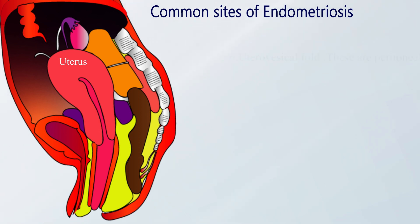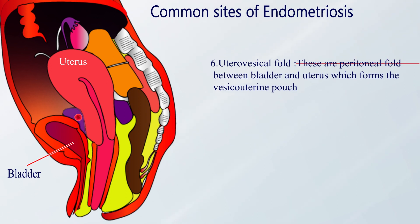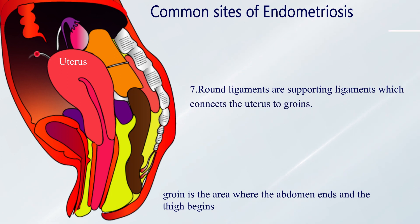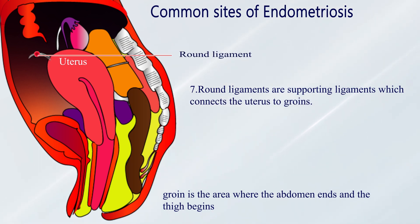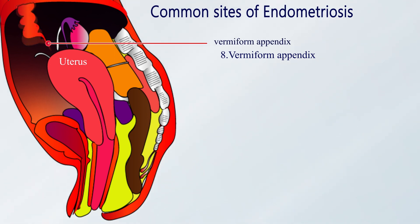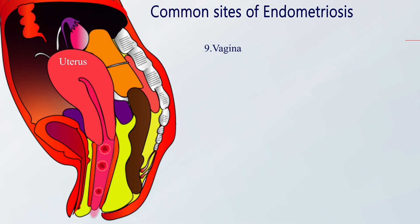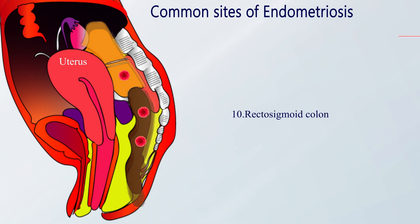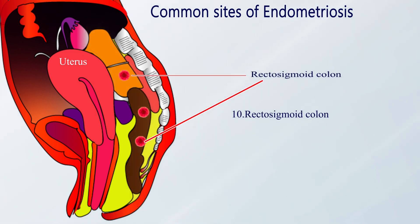Number six is the utero-vesicle fold — peritoneal folds between the bladder and uterus forming the vesico-uterine pouch. Number seven is the round ligaments, supporting ligaments connecting the uterus to the groin. Number eight is the vermiform appendix. Number nine is the vagina. Number ten is the recto-sigmoid colon. These are the ten most common sites of endometriosis.